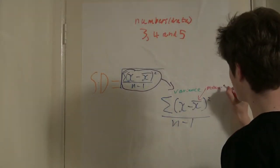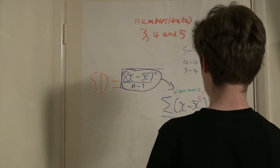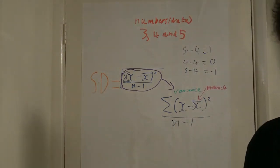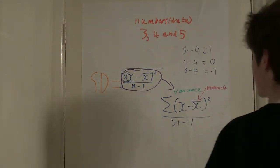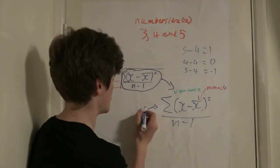The mean here is 4. So now if you minus each number by the mean, you have 5 minus 4 which equals 1, 4 minus 4 which equals 0, and 3 minus 4 which equals negative 1.